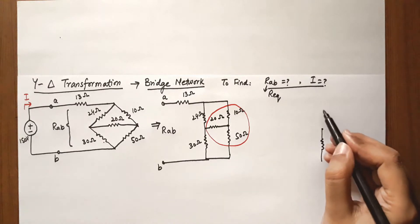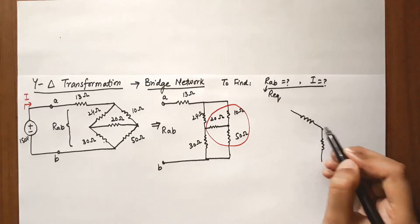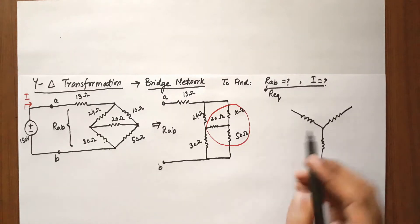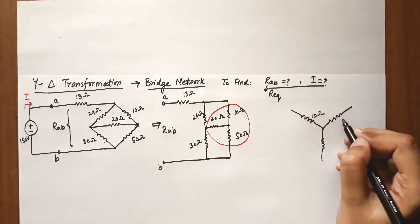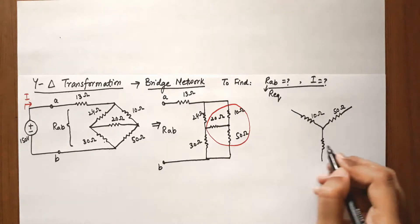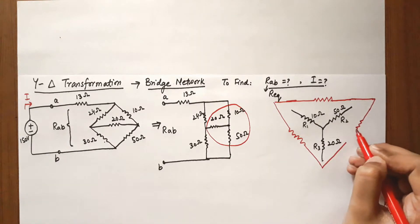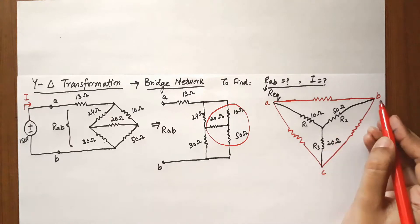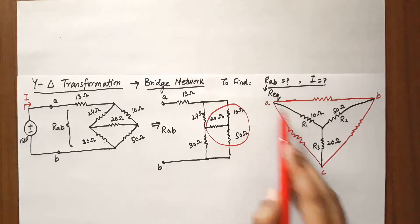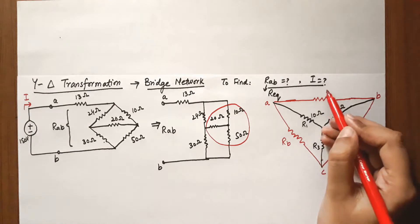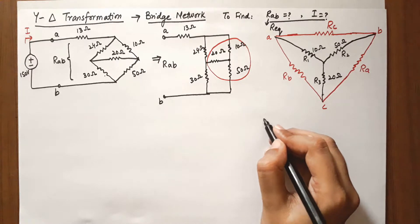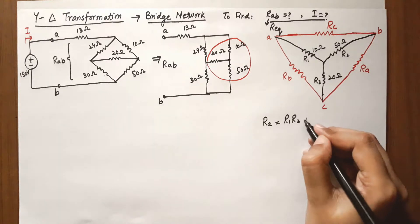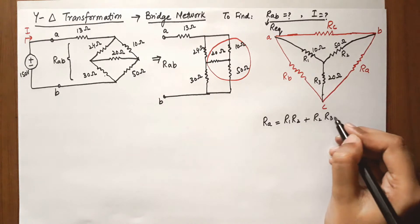If we draw this Y network in a Y shape, the 50 ohm resistor is here and the 20 ohm resistance is here. We will convert this Y network to a delta network. Node B gives resistance Rb, node A gives Ra, and the third node gives Rc. Now, to find Ra for the delta network, we take the Y network resistors two at a time using the standard conversion formula.